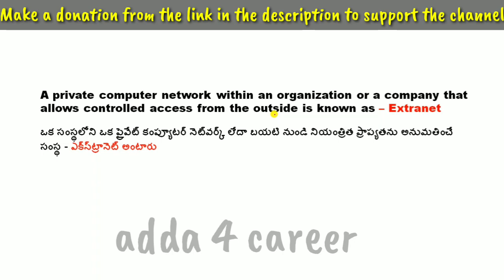A private computer network within an organization that allows controlled access from outside is known as an Extranet. As an organization has a computer network, when the controlling access is from outside of the organization or company, we call it Extranet.